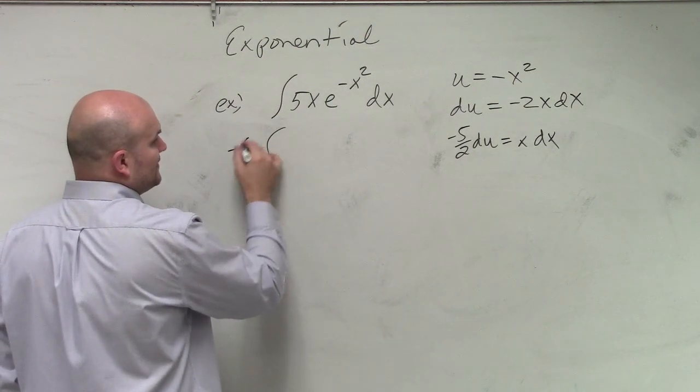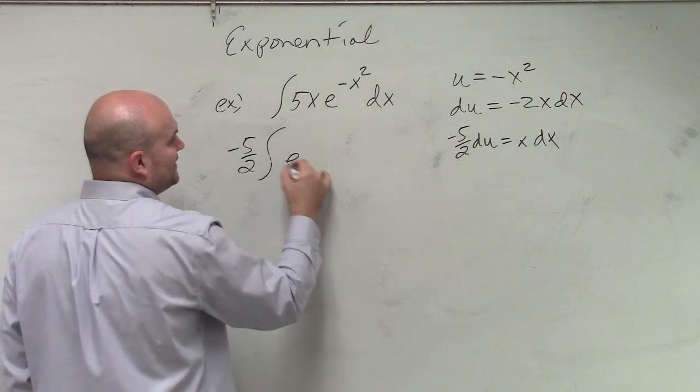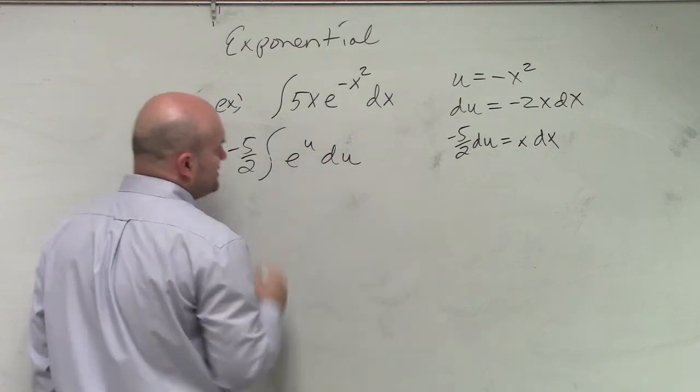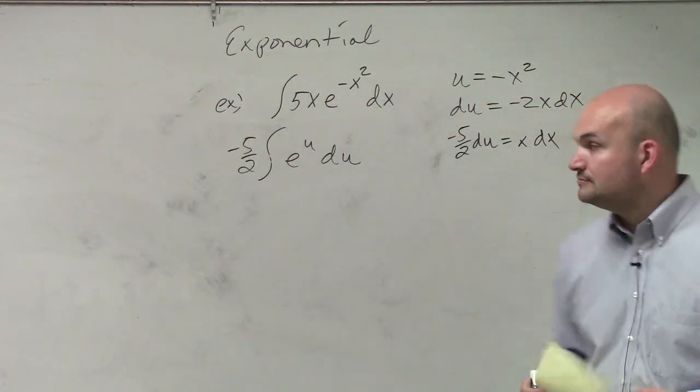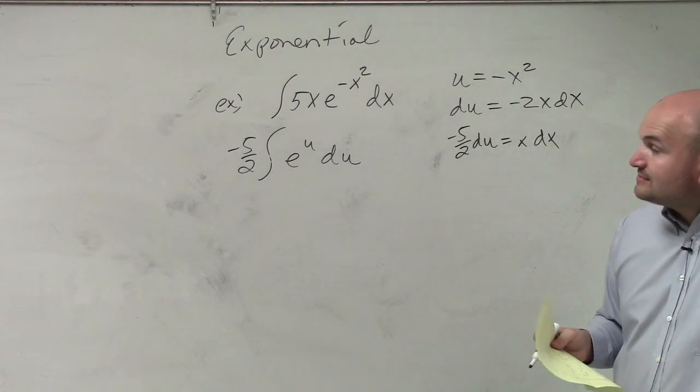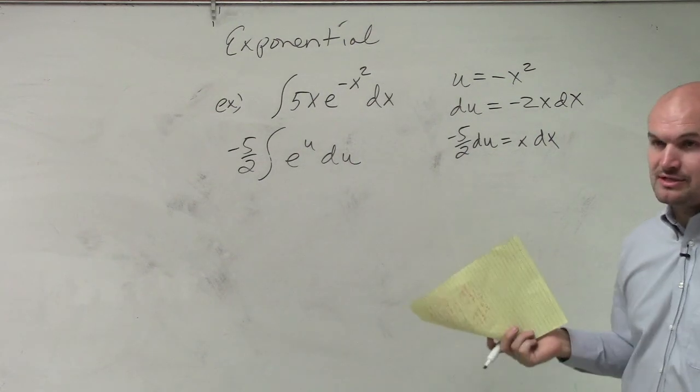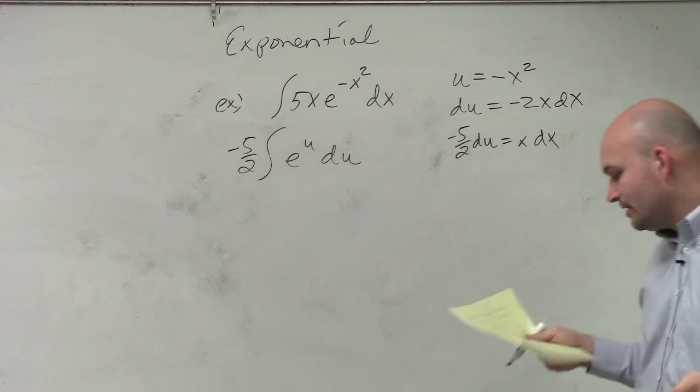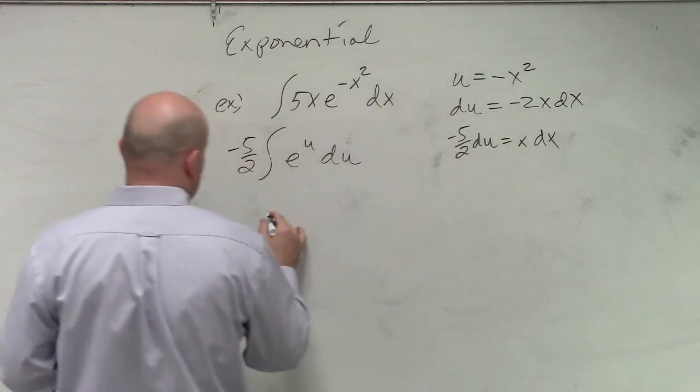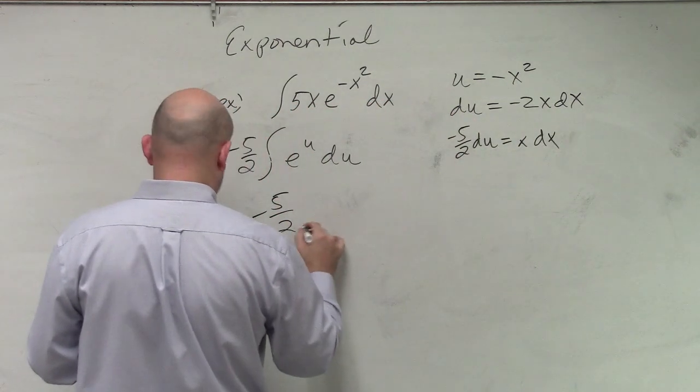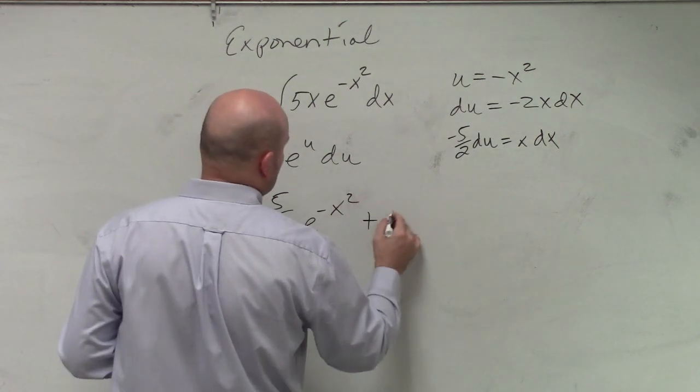Then that's going to go on the outside. And we're going to have e to the u du. And then obviously, ladies and gentlemen, to integrate, we're just going to be left with e to the u. And then we can plug in our u. So our final answer is negative 5 halves e to the negative x squared plus c.